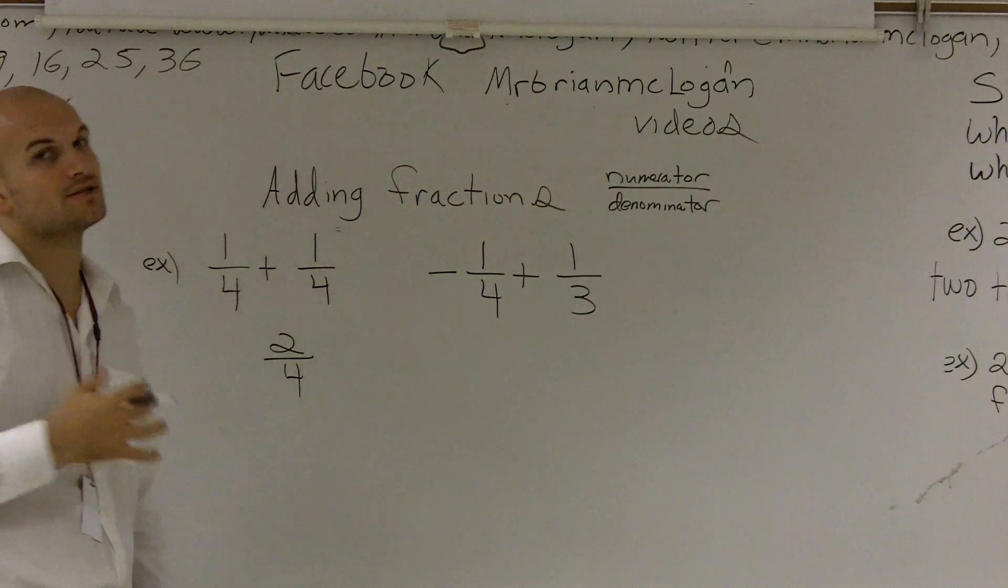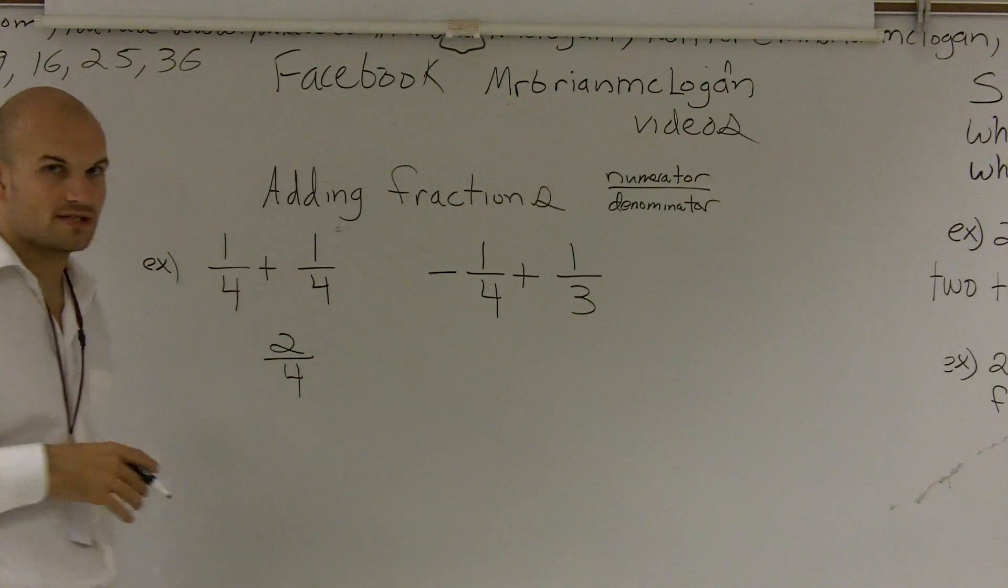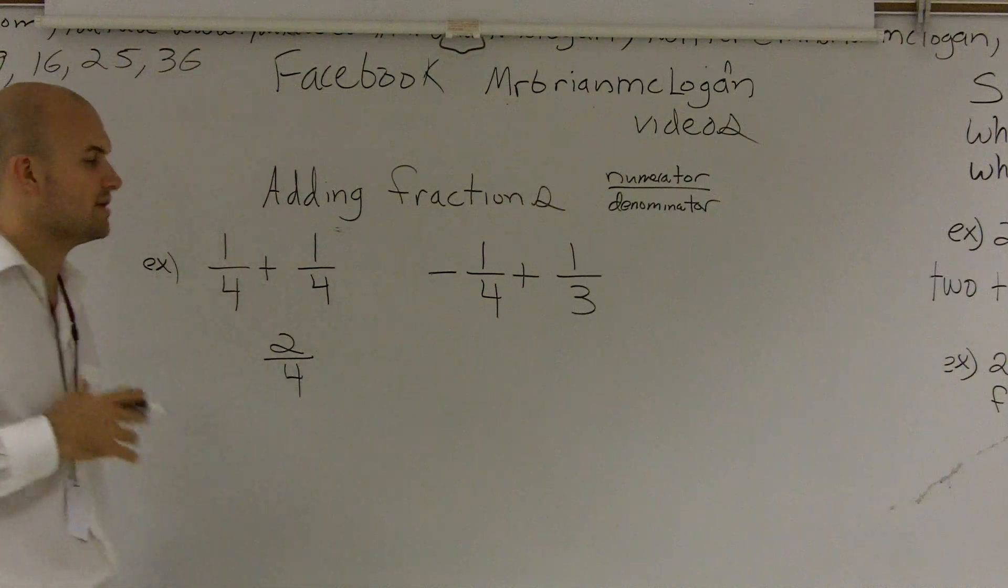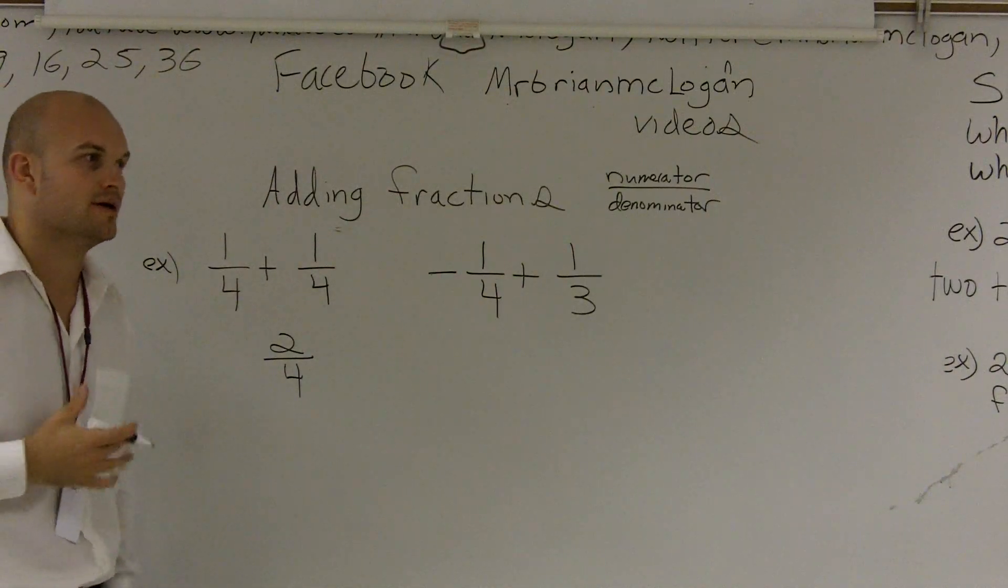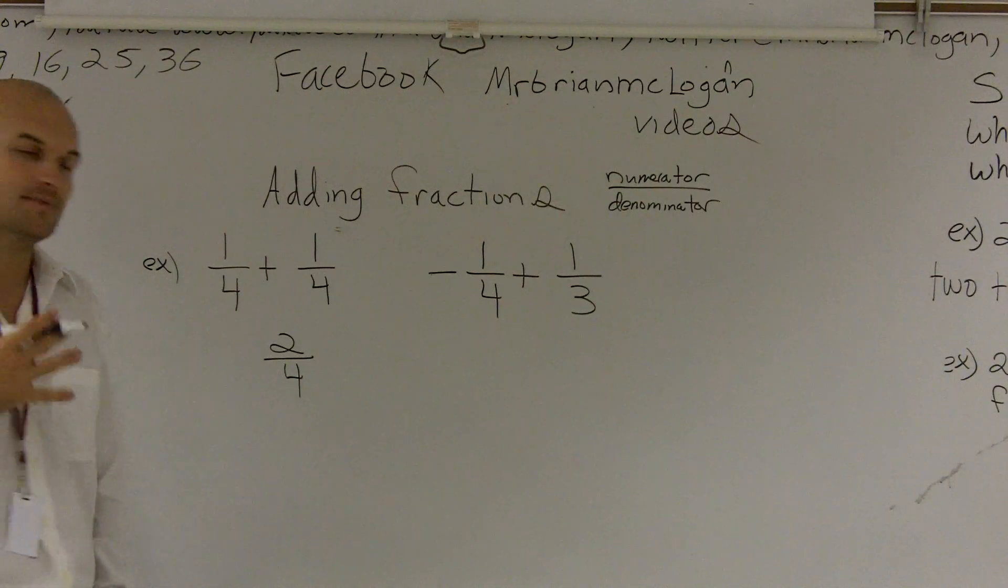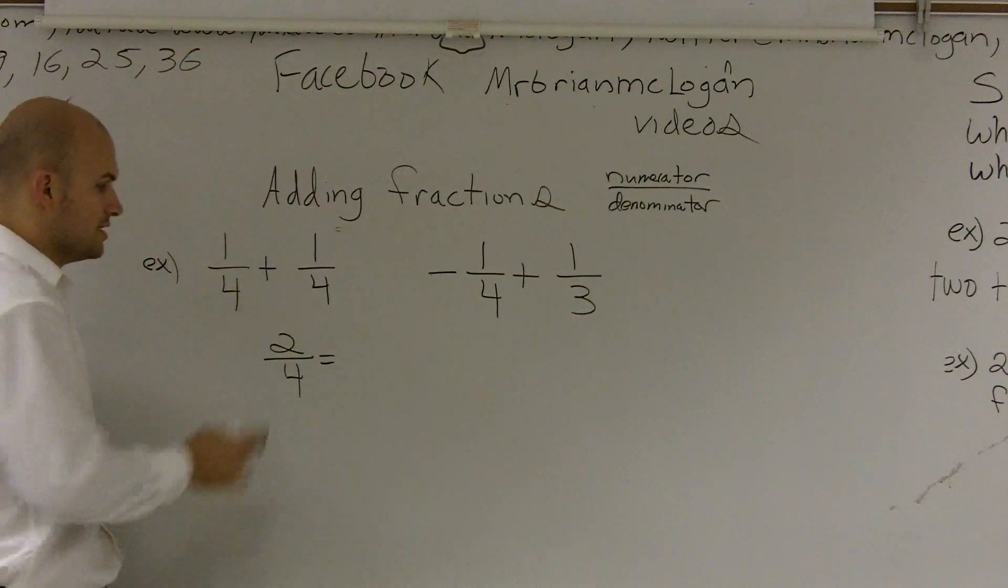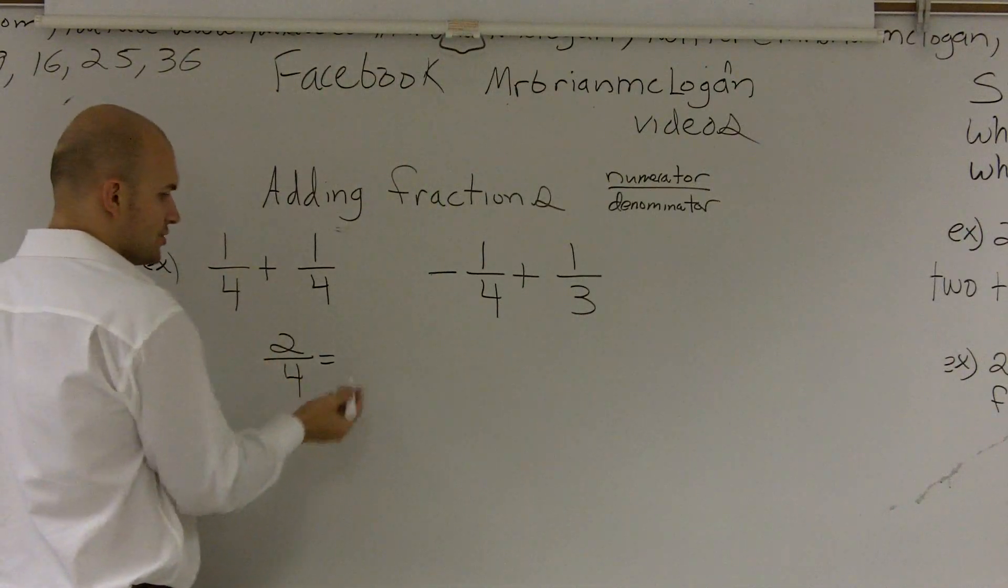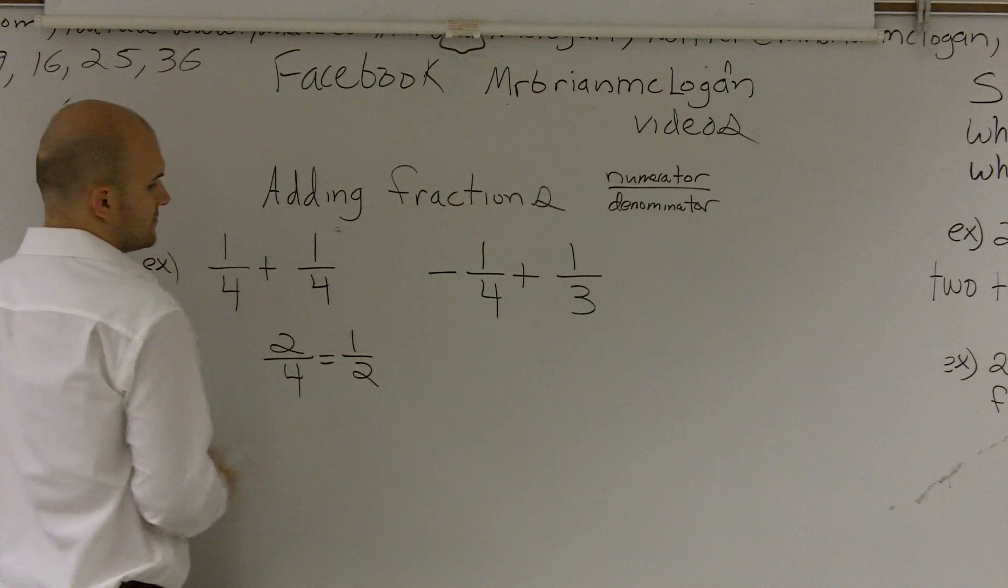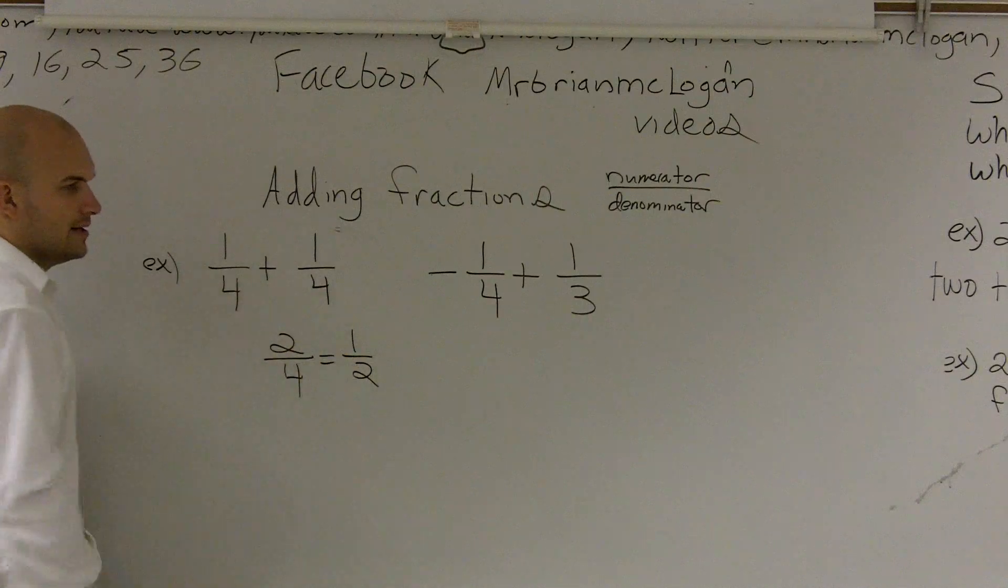Next thing, when we're always doing fractions, we always want to make sure we can reduce our fraction as much as possible. So here I have 2 fourths. If I can divide that out a little bit, what does the numerator and denominator have in common? Or what is a factor that we could divide out or factor out? Well, what you can notice is they both can contain 2. So if I divided the top and bottom by 2, I would obtain 1 half. So therefore, the answer to 1 fourth plus 1 fourth is 1 half.